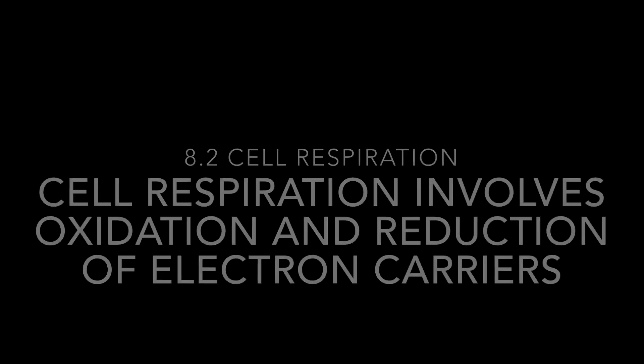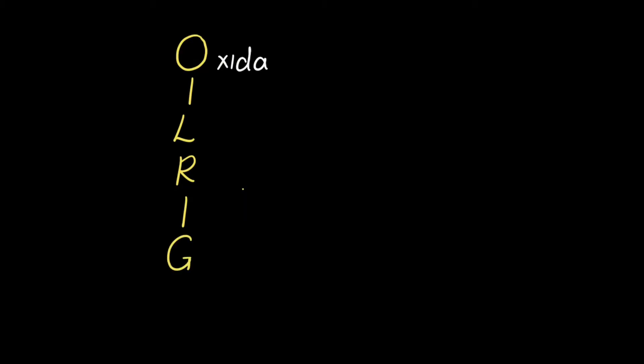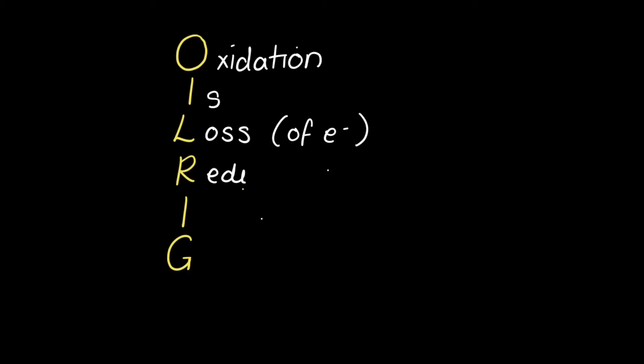Cell respiration involves the oxidation and reduction of electron carriers. Let's first define what oxidation and reduction means. You can use the term OIL RIG to help you remember: oxidation is loss — referring to electrons — and reduction is gain, again referring to electrons.